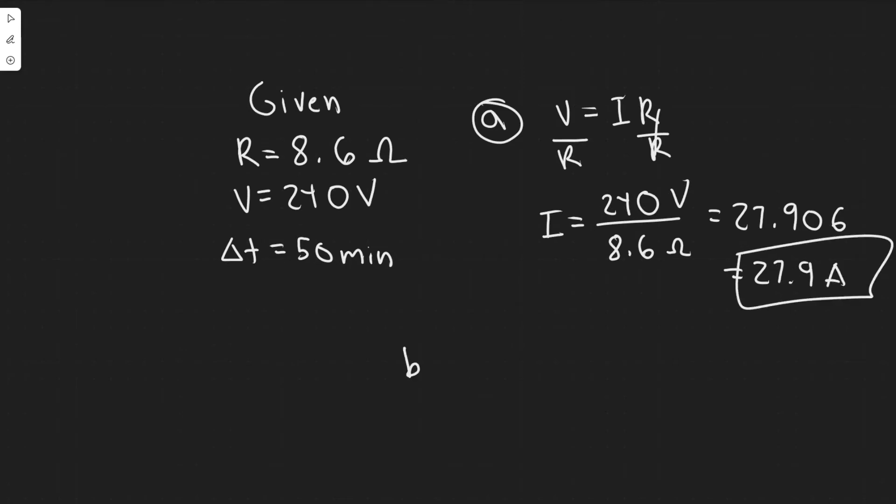Now let's do part B. For part B, we're trying to find how much charge passes through the element in 50 minutes. We need to find charge, but we know the current. So what I'm going to use here is the formula current equals the change in charge over change in time. As long as we have the change in time, which they give us—50 minutes—and we have the current, which we found in step A, we can find how much charge is passing through. All we have to do is multiply both sides by Delta T.